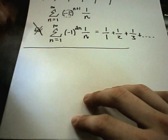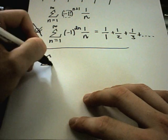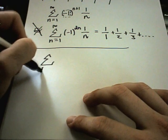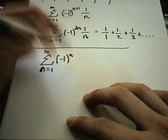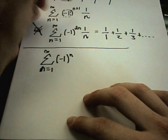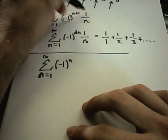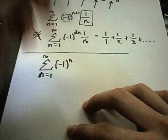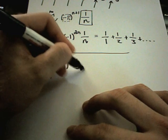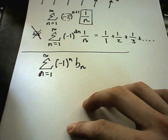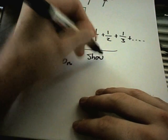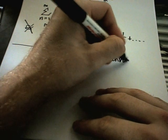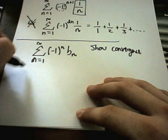And to show convergence or divergence, all you have to do is two things. So suppose I have negative 1 to some power. The stuff that's kind of to the right of the negative 1, in this case it was my 1 over n, we'll call that, they abbreviate that typically as b sub n. And to show convergence, you have to show two things.